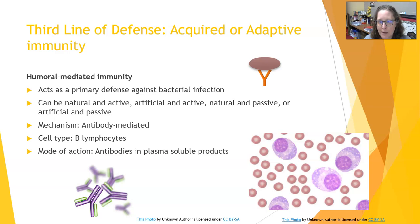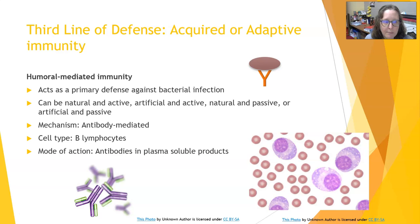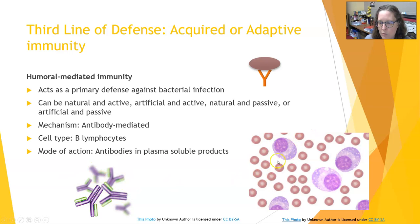Natural passive immunity is receiving preformed antibodies through a natural process — from mother to baby in utero and through breastfeeding. Artificial passive immunity is receiving preformed antibodies through a medical procedure, such as an infusion of anti-sera or antibodies to COVID. The mechanism of humoral mediated immunity is always antibody mediated. The cell type that makes these antibodies is the B lymphocyte, often referred to as the plasma cell. It makes up only about 20% of lymphocytes in the body and produces antibodies as soluble plasma products.